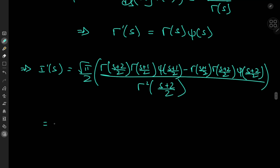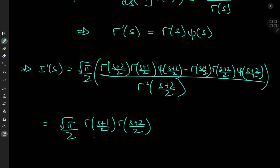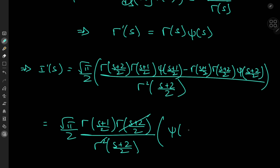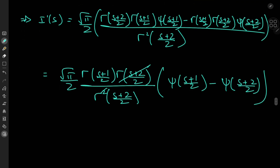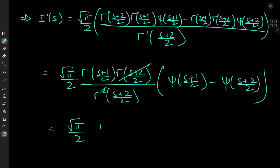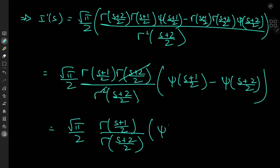We can factor out gamma of s plus 2 by 2 times gamma of s plus 1 by 2 from the numerator, and divided by gamma squared of s plus 2 by 2 there is nice cancellation. What we're left with is root pi by 2 times gamma of s plus 1 by 2, divided by gamma of s plus 2 by 2, times the difference of digamma functions: digamma of s plus 1 by 2 minus digamma of s plus 2 by 2.